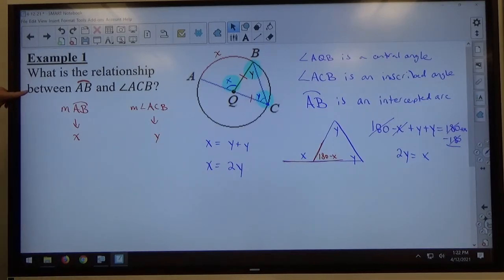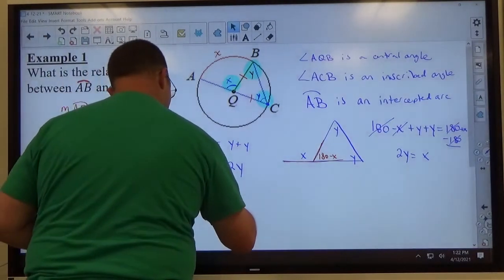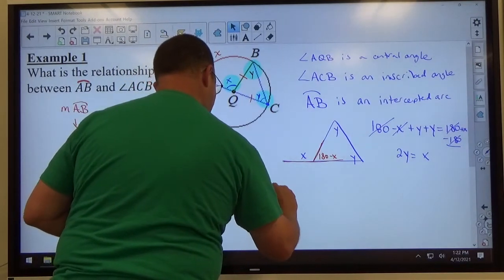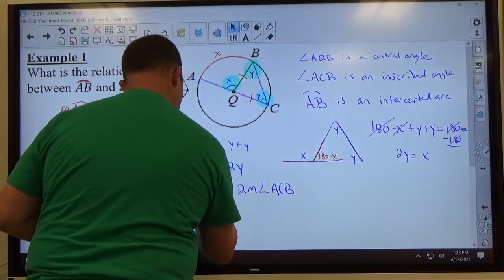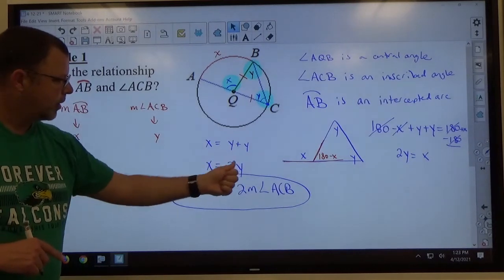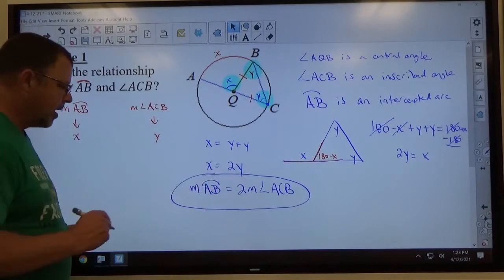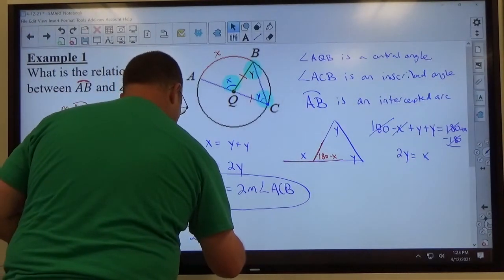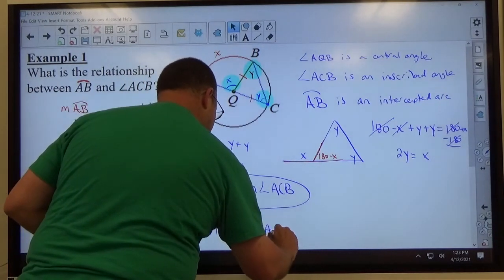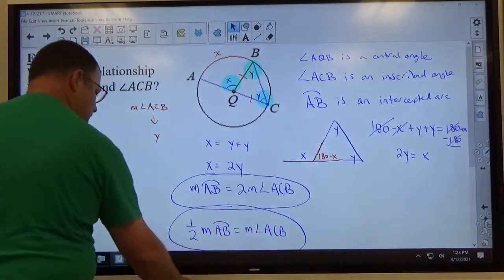So what's the relationship between AB and ACB? That's what they're looking for. So I'd rather have these two pieces in there instead of the X and the Y. I'm going to say the measure of arc AB is equal to 2 times the measure of angle ACB. That's the relationship between them. The other option, if we divide both sides by 2 here, that'd be one half times the measure of arc AB equals the measure of angle ACB.